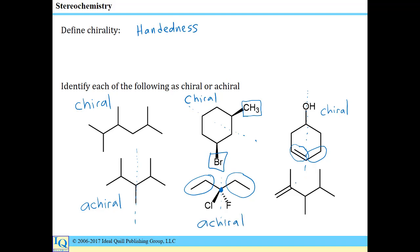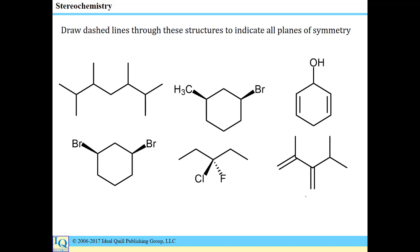This last one has a different substituent on each side in addition to a CH3 and an H that's not drawn, representing four different groups on the carbon. That is a chiral molecule. Our related task would be to identify planes of symmetry in molecules.